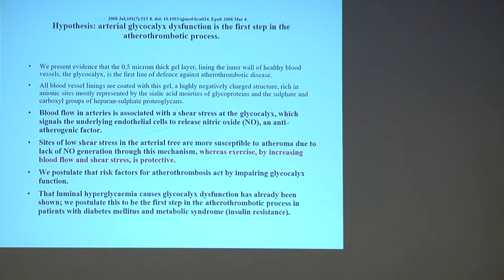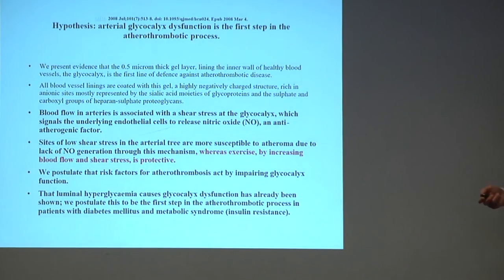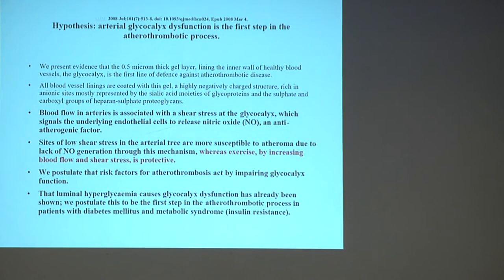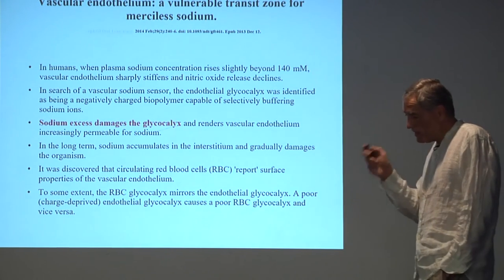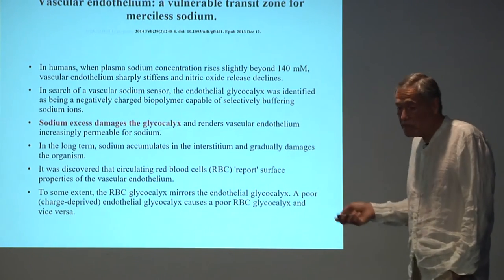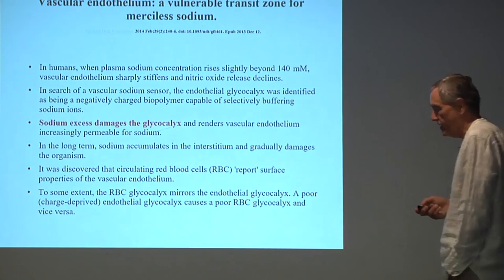In areas of low or high shear stress, there can be damage to the glycocalyx — this occurs in areas where arteries branch off. Sites of low shear stress are more susceptible to atheroma, and mechanisms have been identified. Nitric oxide generation is reduced. Exercise increases blood flow and shear stress, so exercise is protective. Luminal hyperglycemia causes glycocalyx dysfunction. Hypernatremia also causes dysfunction — when plasma sodium is slightly above 140, vascular endothelium stiffens and nitric oxide release declines.